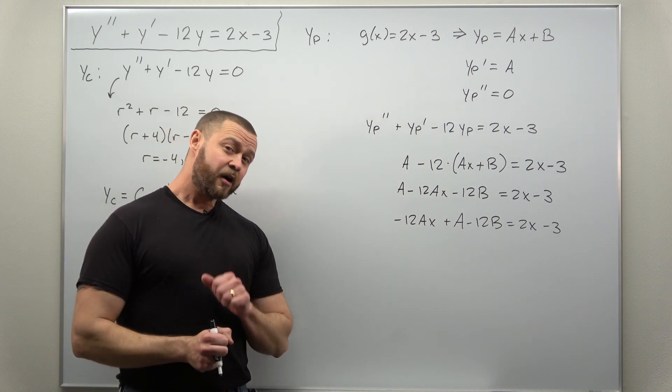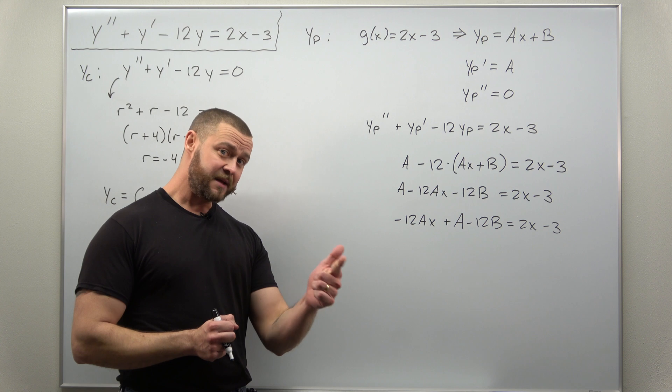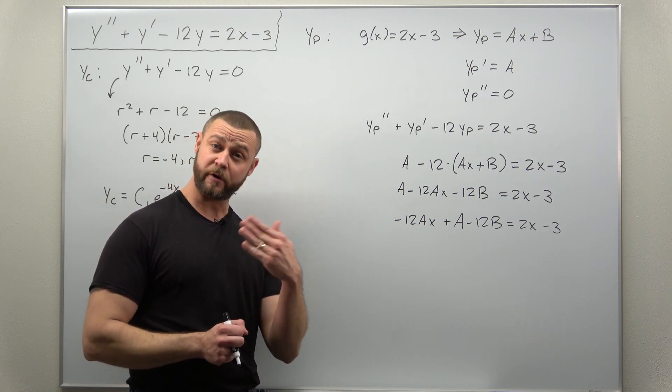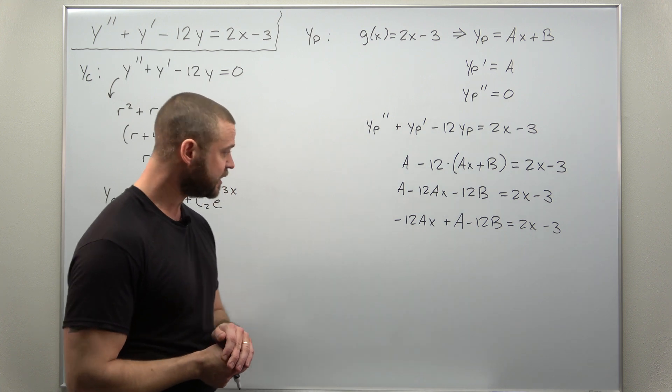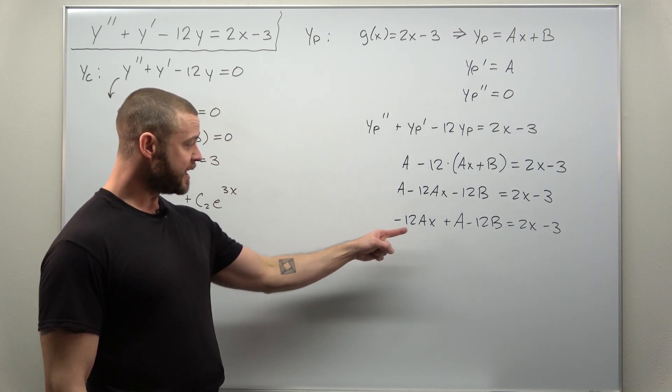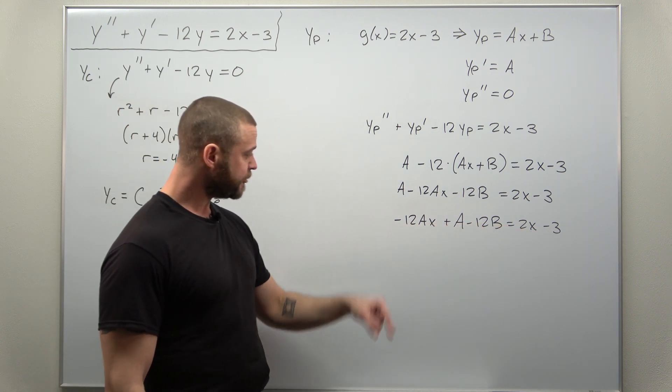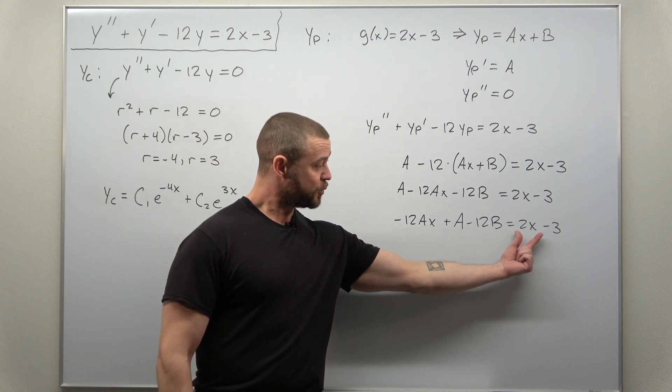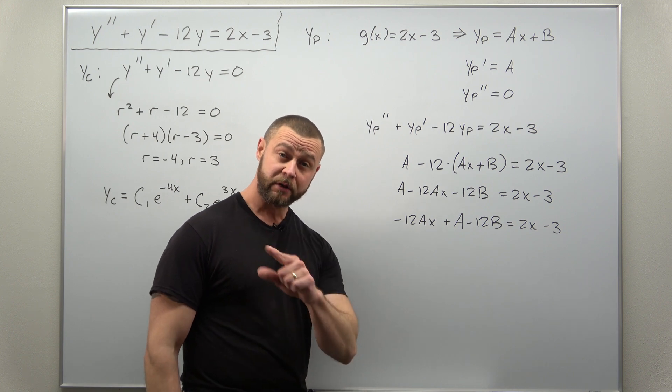From here, we can get our equations to solve for a and b by equating coefficients on each side. We have x's on each side. So this coefficient of x, negative 12a, should equal that coefficient of x, 2.